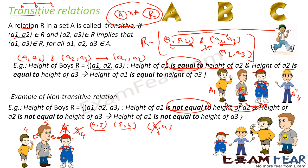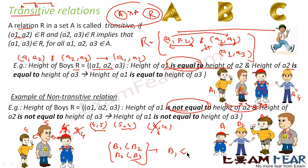The 'greater than' relation is also transitive. Similarly, let's look at the 'less than' relation. If height of B1 is less than B2, and height of B2 is less than B3, this implies height of B1 is less than B3. This holds true for all cases, so 'less than' is a transitive relation. In general, 'less than' and 'greater than' are transitive relations, 'not equal to' is generally non-transitive, and 'equal to' is also transitive.